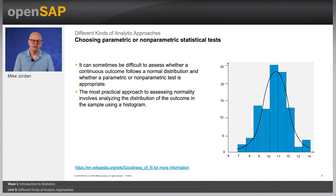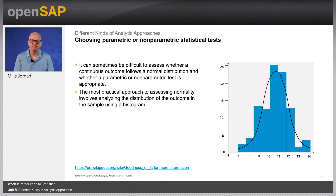Non-parametric tests are sometimes called distribution-free tests because they are based on fewer assumptions. They do not assume that the outcome is approximately normally distributed. However, parametric tests involve specific probability distributions, for example the normal distribution, and the tests involve estimation of the key parameters of that distribution, for example the mean or difference in means from the sample data. There are also several statistical tests that can be used to assess whether data are likely to come from a normal distribution, and each test is essentially a goodness-of-fit test that compares the observed data to quantiles of the normal distribution or other specified distributions.